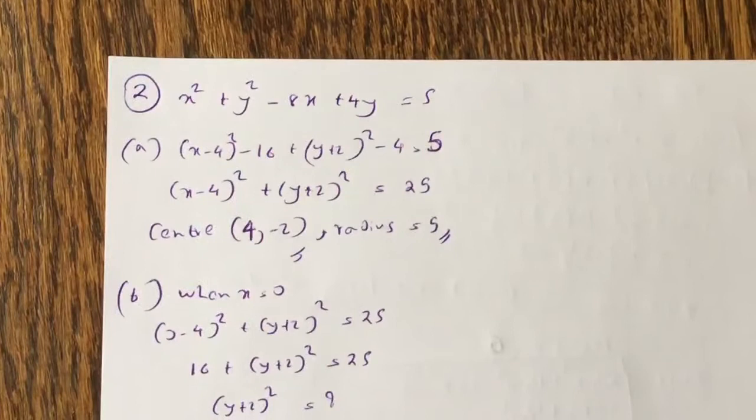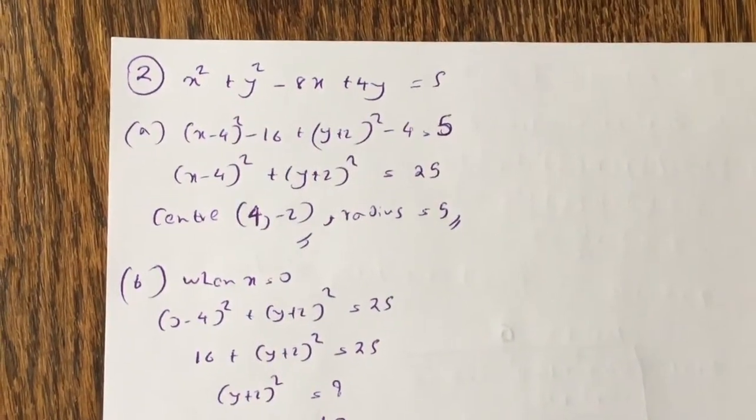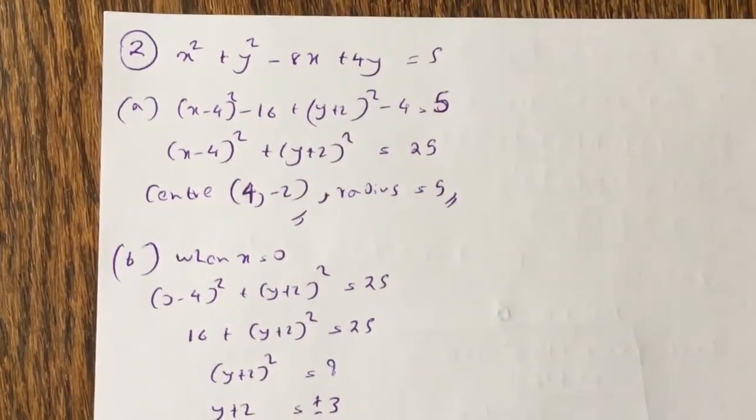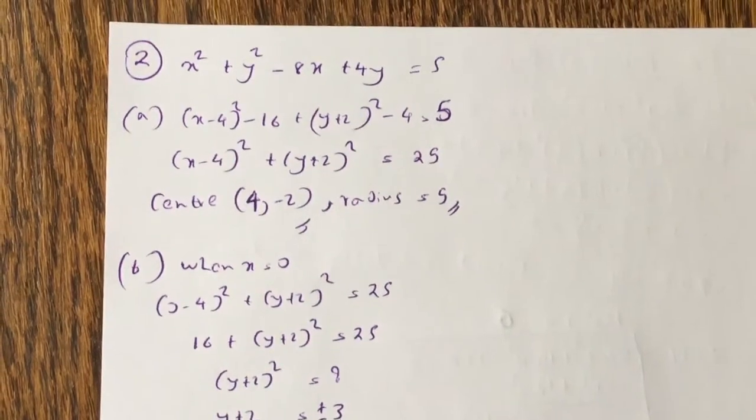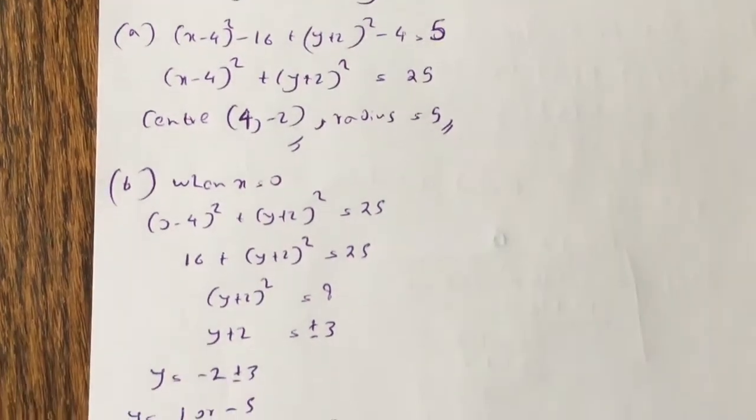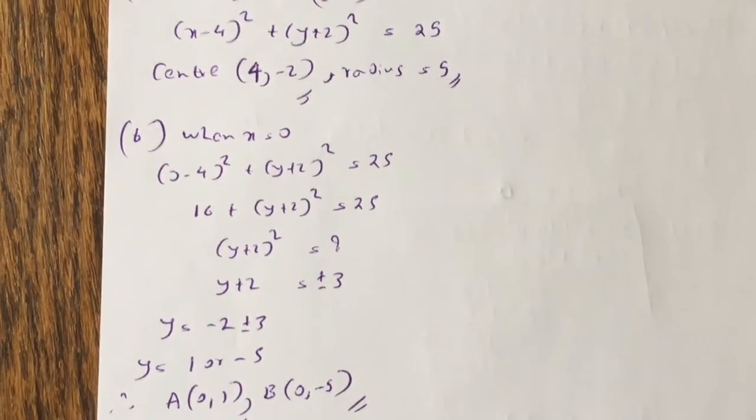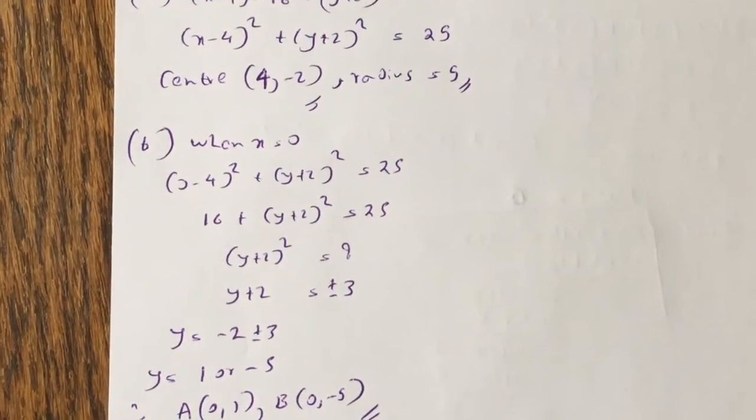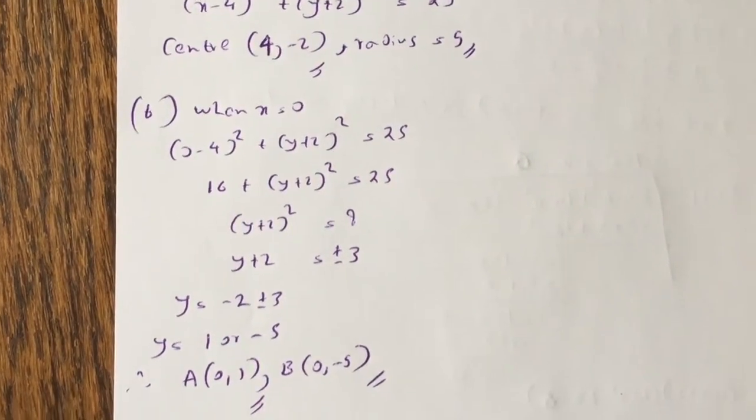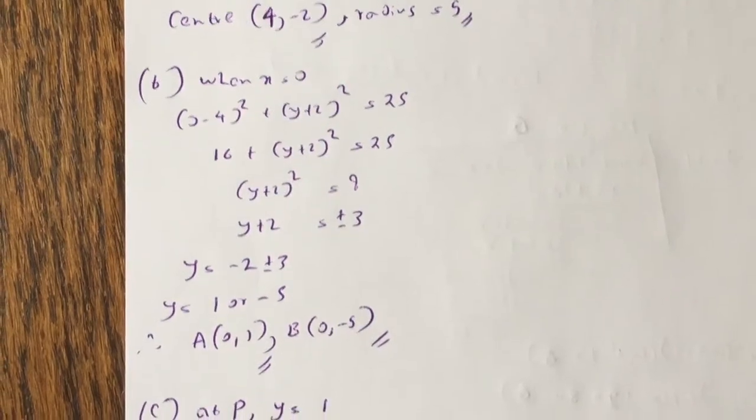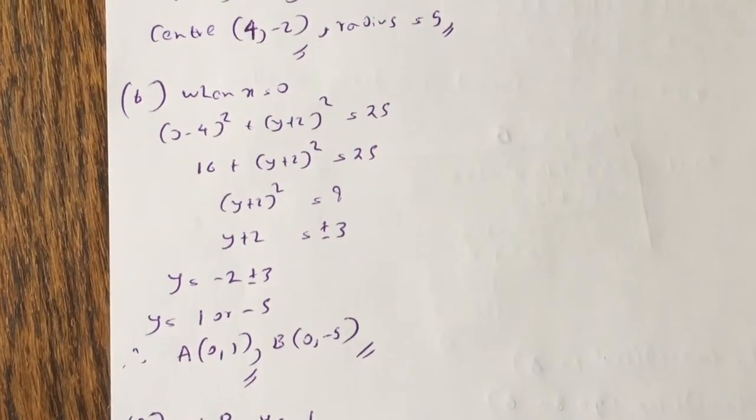Question 2. Okay, so you complete the square for the circle, and the centre is 4 minus 2, radius is 5, and when x equal to 0, you substitute the point in, and you get y equals to 1 or minus 5, so therefore a is 0, 1, and b is 0, minus 5.